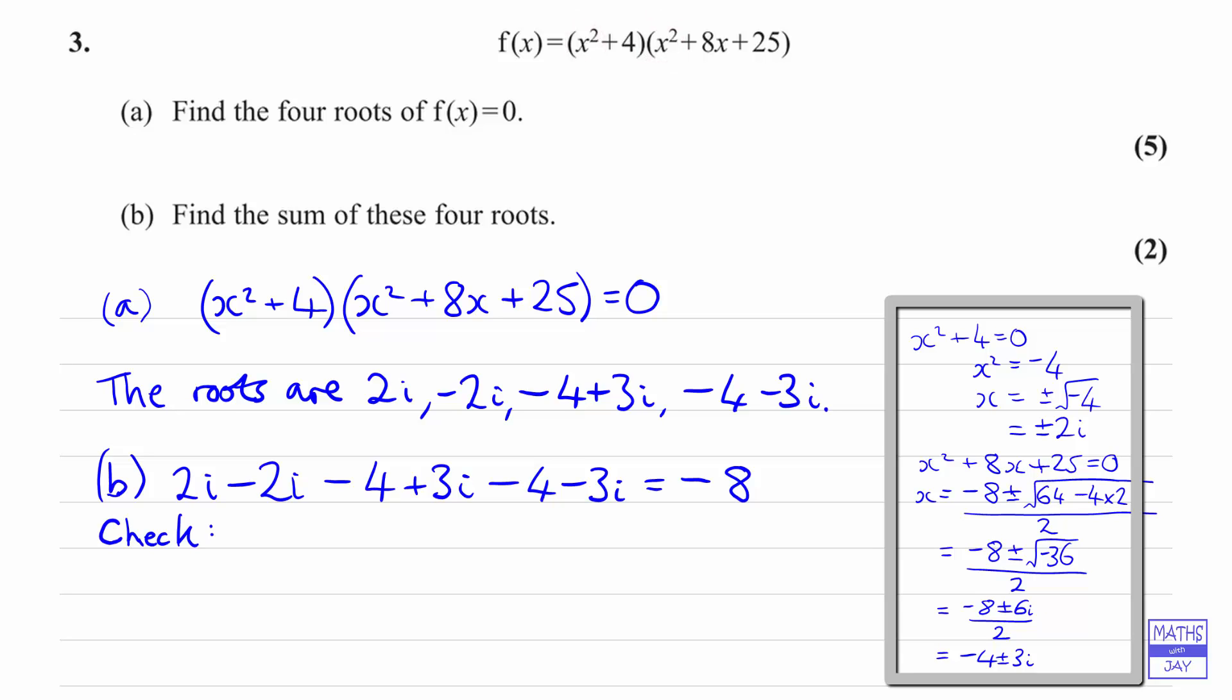Then you'd multiply something else together to get a term in x³ and so on. So you'd end up getting something that's clearly a quartic starting off with x to the fourth and ending up with, well 4 times 25 will be 100.